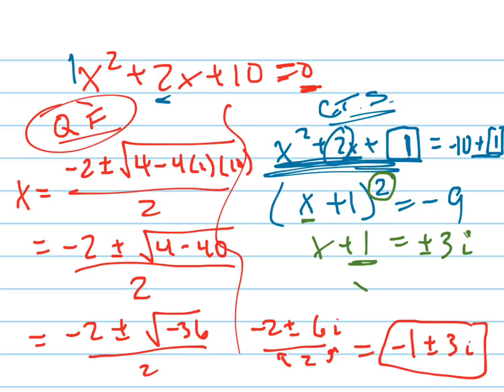And now, how do I get rid of the 1? Subtract it. It actually was easier to complete the square if you knew how to do that. So -1 plus or minus 3i.